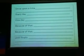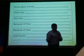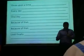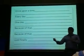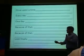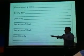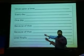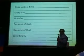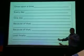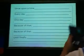Here's the six-sentence structure. Once upon a time, there was a fish called Nemo. Every day, Nemo went to school. One day, Nemo got lost. Because of that, his father went to look for him. Because of that, his father crossed the Pacific Ocean on the back of a turtle and arrived in Australia — that one's slightly more complicated. Until finally, he found Nemo and brought him home. And they all lived happily ever after.